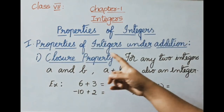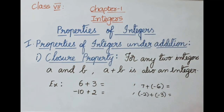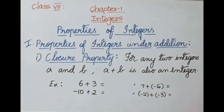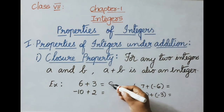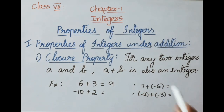First, properties of integers under addition. The first one is closure property. For any two integers A and B, A plus B is also an integer. For example, 6 plus 3 equals 9. So 6 and 3 are two integers, and their sum 9 is also an integer.